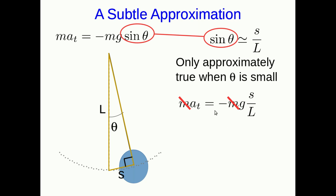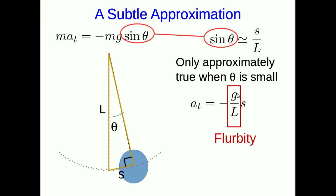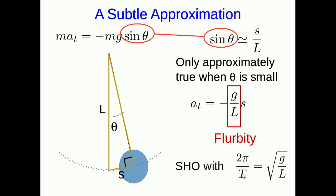Now we can replace sin θ with s/L in our equation, giving a = −(g/L)·s. Since s is our displacement, this looks exactly like a = −flurbity × displacement, with flurbity = g/L. This has the right form for simple harmonic motion, so we've shown — approximately, for small θ — that the pendulum executes simple harmonic oscillations. The period follows from 2π/T = √(g/L).